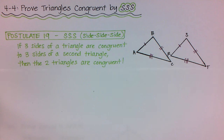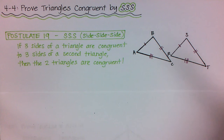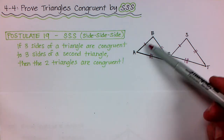This is Postulate Number 19 and we're calling it SSS, or Side-Side-Side Congruence Postulate. What it says is: if three sides of a triangle are congruent to three sides of a second triangle, then we can assume that the two triangles are congruent.